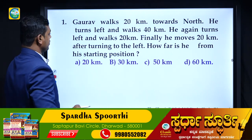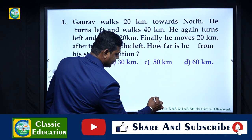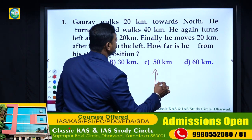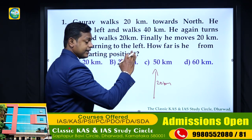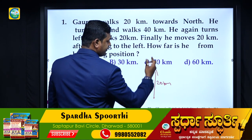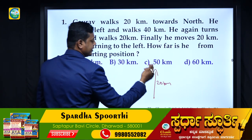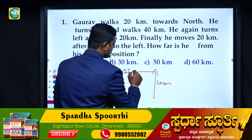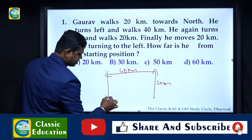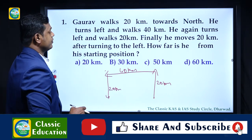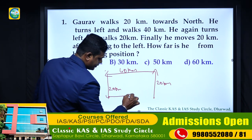First example: Gaurav walks 20 meters towards north - mark the starting point, then 20 kilometers north. He turns left and walks 40 kilometers. He again turns left and walks 20 meters. Finally, he moves 20 kilometers after turning to the left.